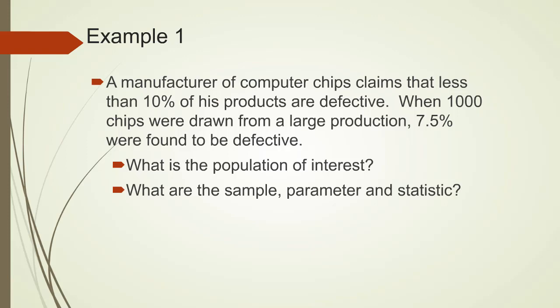Example 1. A manufacturer of computer chips claims that less than 10% of his products are defective. When 1,000 chips were drawn from a large production, 7.5% were found to be defective. The population of interest is all computer chips from this large production. The sample is 100 chips that were drawn, parameter is 10%, and statistic is 7.5%.